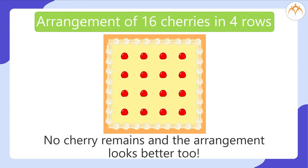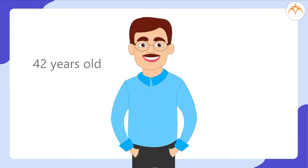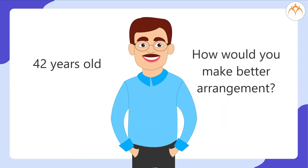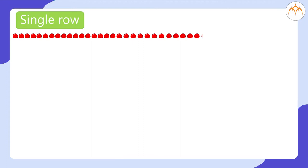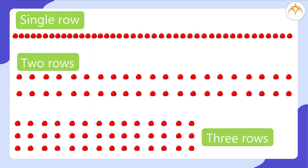No cherry remains and the arrangement looks better too. If it would have been birthday of your father who is 42 years old, how would you make a better arrangement? Same as before. Try to arrange 42 cherries in single row or 2 or 3 rows and so on.